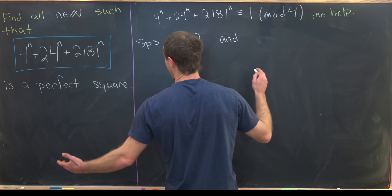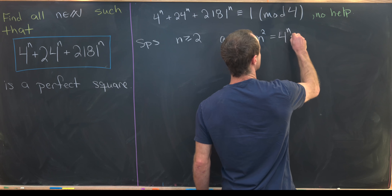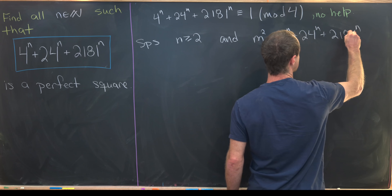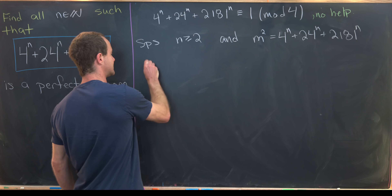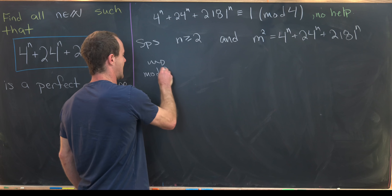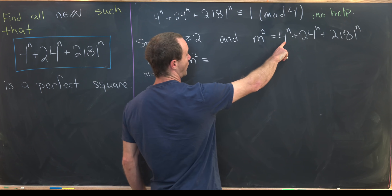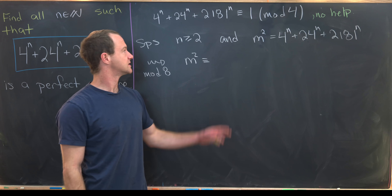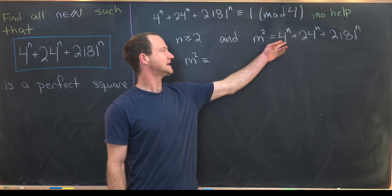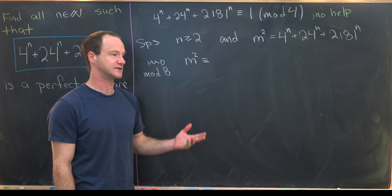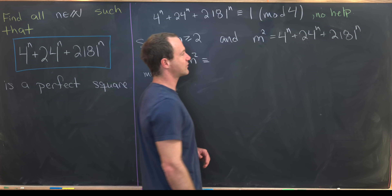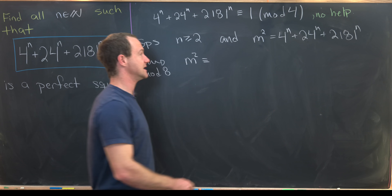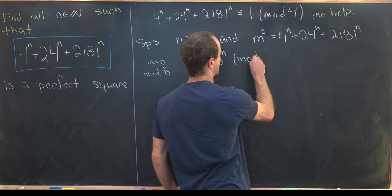So suppose m² = 4^n + 24^n + 2181^n and we reduce mod 8. When n ≥ 2, 4^n has at least a factor of 16, so 4^n ≡ 0 mod 8, and 24^n ≡ 0 mod 8. What remains is 2181^n mod 8, which is the same as 5^n mod 8.